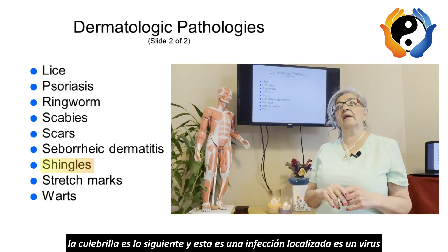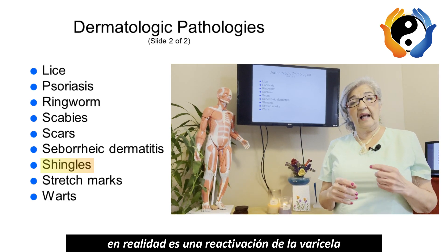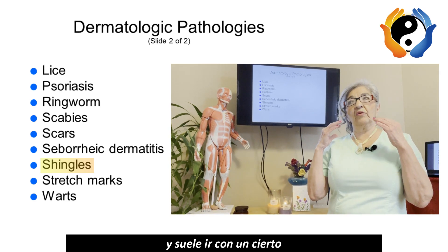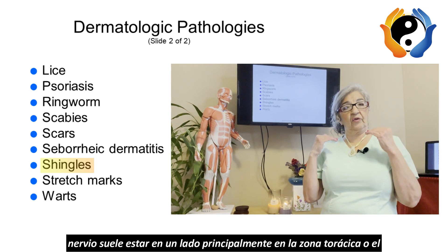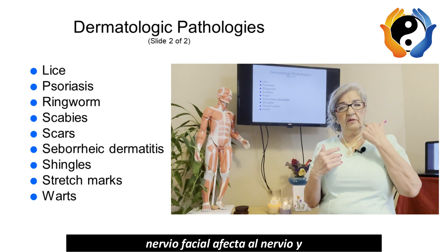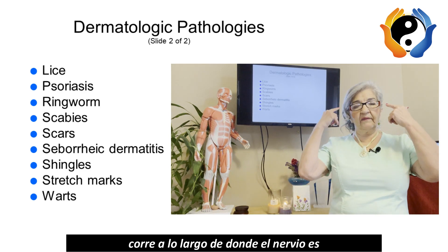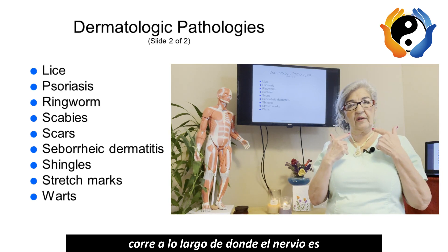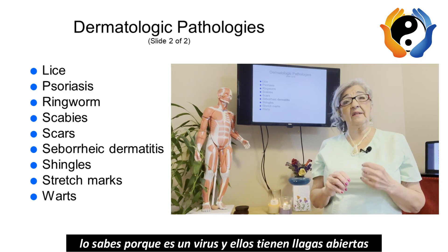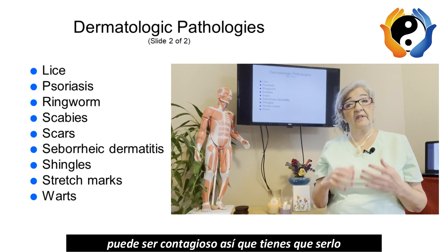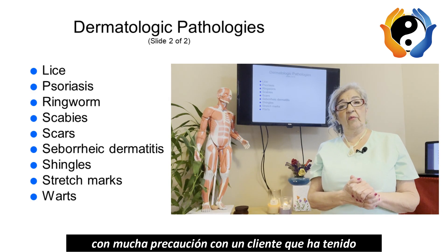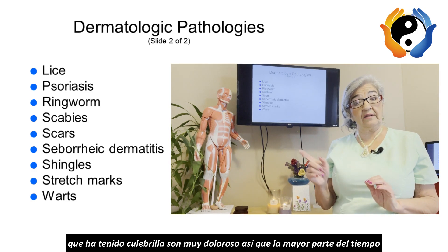Shingles is a localized infection — it's a virus, actually a reactivation of the chicken pox. It usually follows a certain nerve, mainly on one side, in the thoracic area or along the facial nerve. It runs lengthwise along the nerve and is very painful. Since it is a virus with open sores, it can be contagious, so you must be very careful.